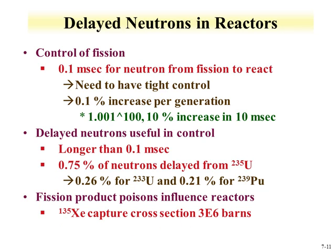A great example of neutron absorption by fission products is xenon-135. It lives in a very high-yield isobar region and has a thermal neutron capture cross-section of 3×10^6 barns. This isotope can actually be responsible for shutting down reactors due to its large neutron absorption.